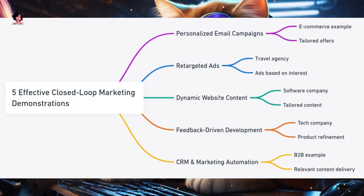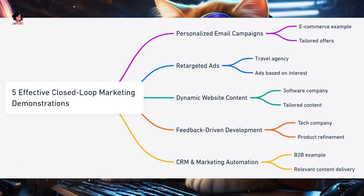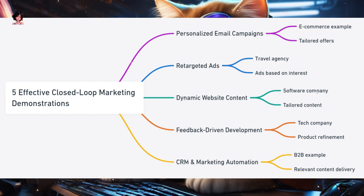Five stellar demonstrations of closed-loop marketing. Closed-loop marketing is like a feedback loop in music production, where the output is continually fed back into the system to refine and improve the sound. First, personalized email campaigns — an e-commerce store tracks user behavior on their website. If a user browses winter jackets but doesn't make a purchase, they receive a personalized email a few days later showcasing a special discount on winter jackets. Outcome: increased sales and enhanced customer experience due to tailored content.